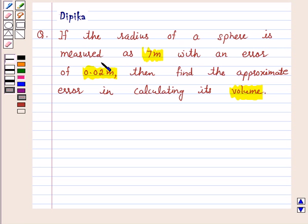If the radius of a sphere is measured as 7 meter with an error of 0.02 meter, then find the approximate error in calculating its volume.